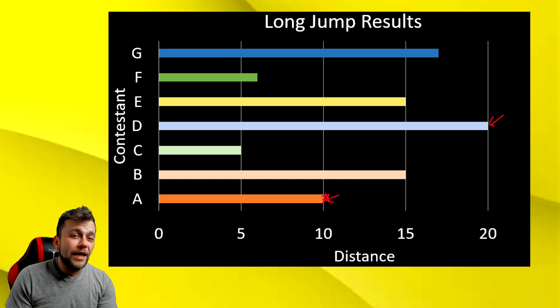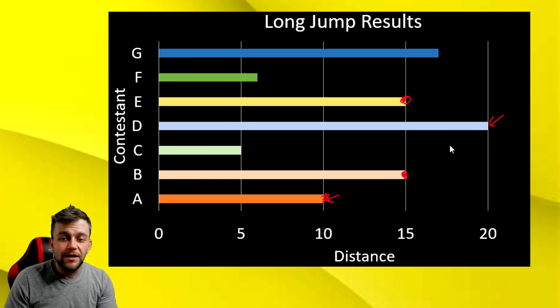For our next question, it is Katie and Elena jumped the exact same distance. Let's put a mark on the bar graph of the two contestants, Katie and Elena. Go ahead and pause the video. All right. So that would be all you have to do is just take a look at the bar graph and find out. Take a look here. We have this person right here and this person right here. They jumped exactly 15 feet. And that's how we know that this is Katie and Elena.